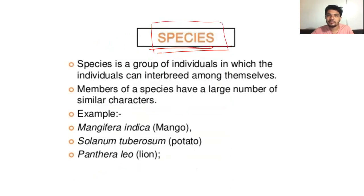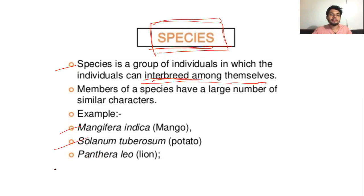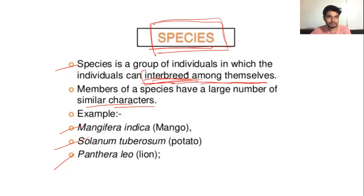What is species? Species is a group of individuals in which the individuals can interbreed among themselves. So that group will be known as species. Here we have some examples: Mangifera indica is a species, Solanum tuberosum is potato, and Panthera leo is lion. Members of a species have a large number of similar characters but some differences will be there. The key point is that individuals within a species can interbreed among themselves.